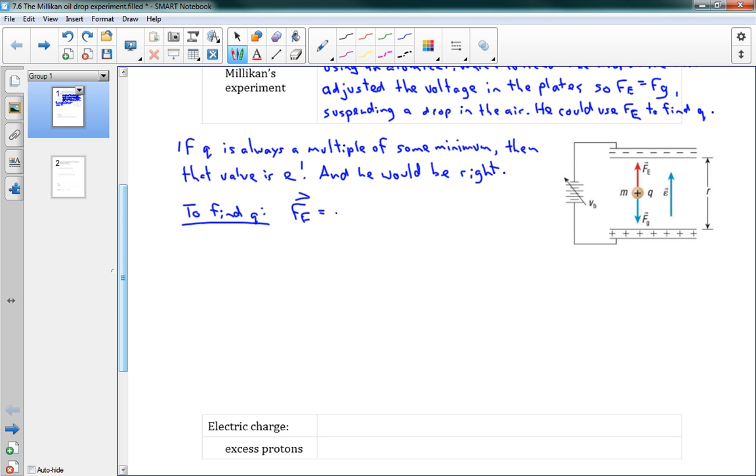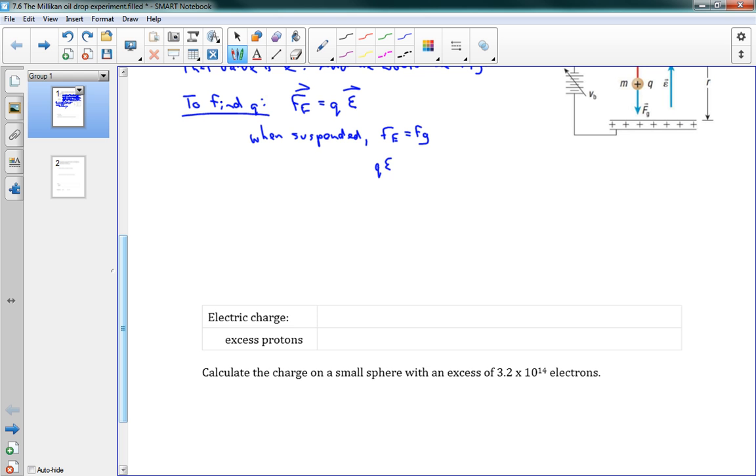He says, well, the electric force is equal to Qε. We know that. That's one of our equations. When the particle is suspended, when it's just hovering in the air, it means that FE is equal to FG, which means that Qε is equal to Mg, which means that Q is equal to Mg over ε. This is when everything is balanced.